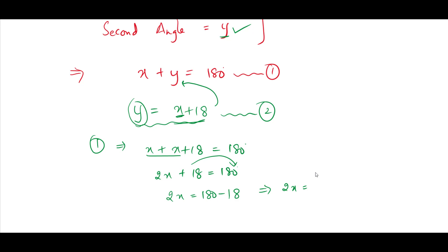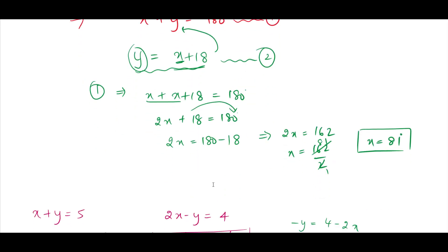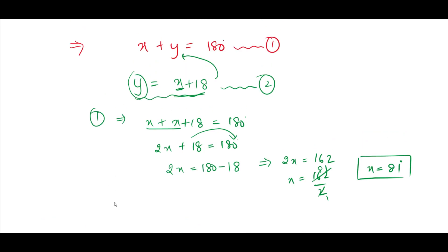So 2x equals 162. Therefore x equals 162 divided by 2, which gives x equals 81 degrees. Now substituting back, y equals x plus 18, so y equals 81 plus 18, which gives y equals 99 degrees. We got x as 81 degrees and y as 99 degrees.